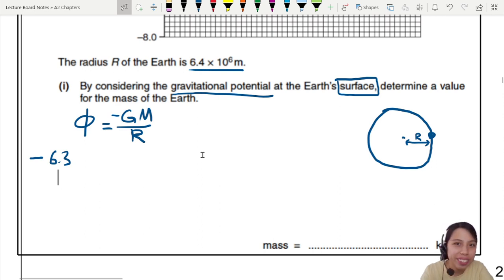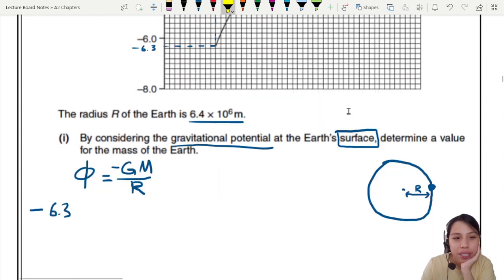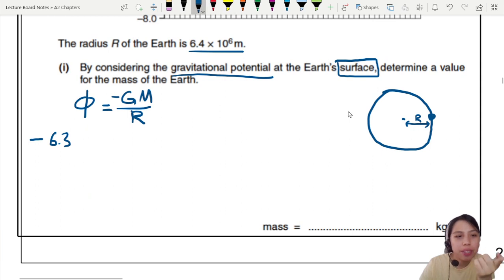Just 6.3? No power, no prefix? Wait, wait. Oh, there is a prefix. Usually it's a very big order, 10 to the power of something. So be careful. So this is 6.3 times 10 to the power of 7. I think that's right.